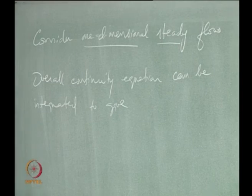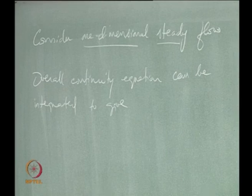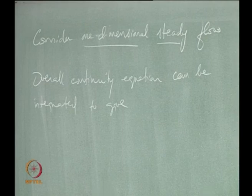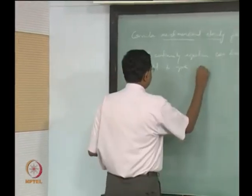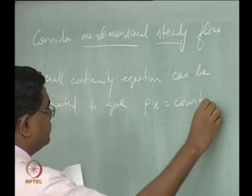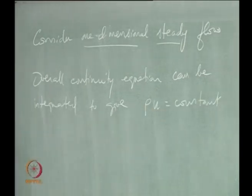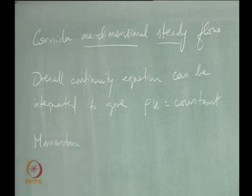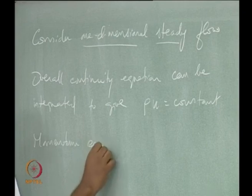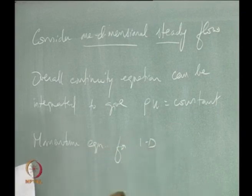The overall continuity equation we had was dρ/dt plus divergence of ρv equals zero. For steady flow, the dρ/dt term drops out. For one dimension, we have d/dx of ρu equals zero. Integrating, we get ρu equals a constant.